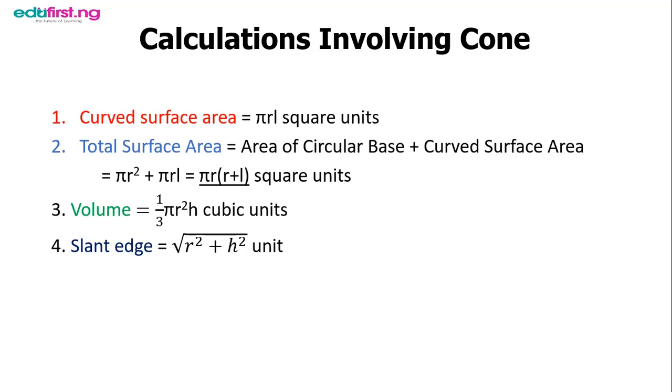The second one is total surface area, which has to do with the area of the circular part and the area of the curved part. By the time you add the two together, you have πr(r+l), and you must always remember the square units.